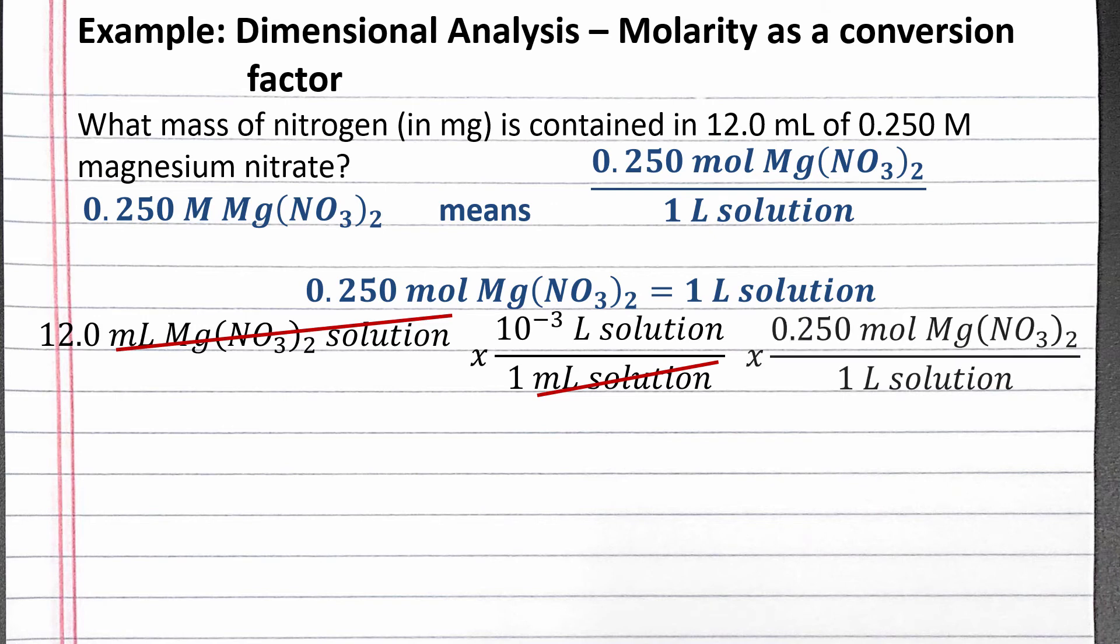Using our molarity, we can convert from liters of solution to moles of magnesium nitrate. Next, we'll use our chemical formula to convert from moles of magnesium nitrate to moles of just nitrogen.